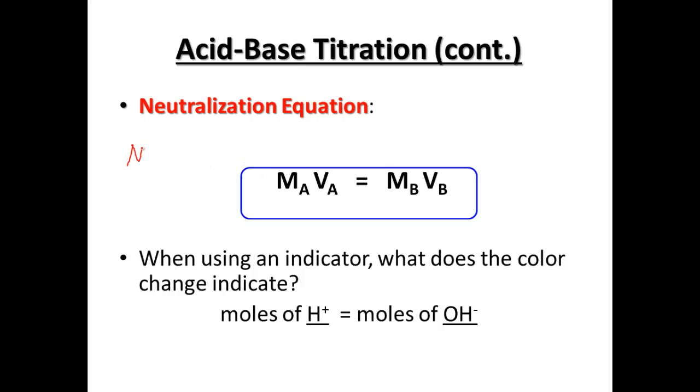So M is going to be for molarity and V is volume, and then A is for acids and B is for bases. So what we're going to use is this equation here. The molarity of the acid and the volume of the acid is going to be equal to the molarity of the base times the volume of the base.